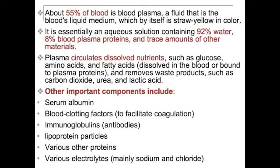About 55% of the blood is plasma. It is the blood's liquid medium, which by itself is straw yellow in color. It is essentially an aqueous solution containing 92% water, 8% blood plasma proteins, and trace amounts of other materials. The plasma circulates dissolved nutrients such as glucose, amino acids, and fatty acids, and removes waste products such as carbon dioxide, urea, and lactic acid.